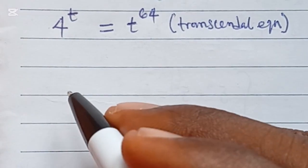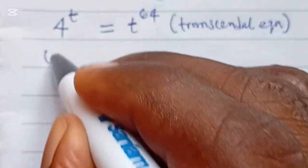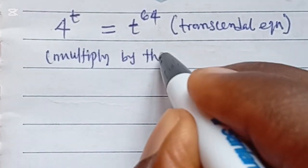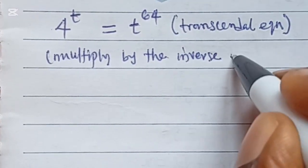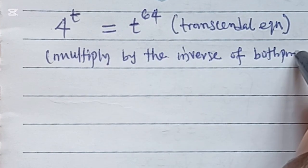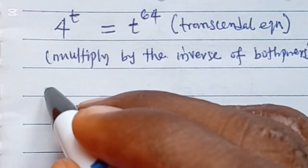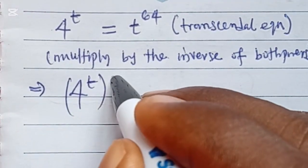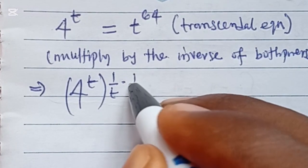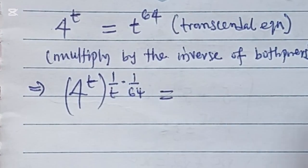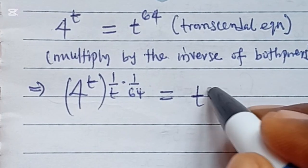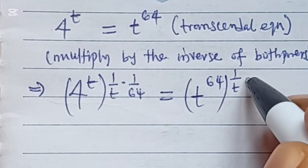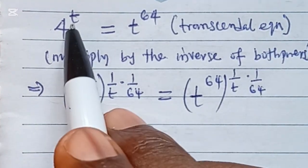What you want to do is to multiply by the inverse of both powers — for both sides. So we have 4 to the power of t on the left. We'll multiply by 1 over t and then 1 over 64. On the right-hand side, we do the same: t to the power of 64, we also multiply by 1 over t and 1 over 64.